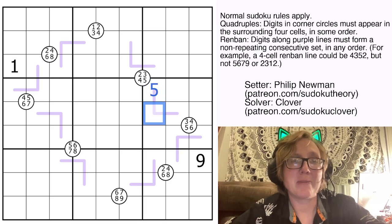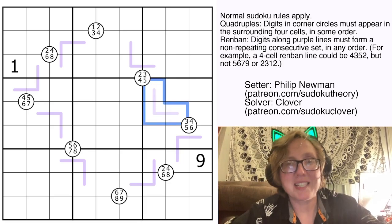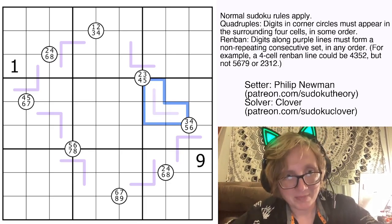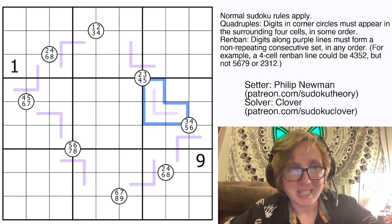Or we could have 7, 5, 6, something like that, because 5, 6, 7 is consecutive, but they don't have to show up in order. And that is going to be all we need to solve this puzzle, so let's have a quick look at it.